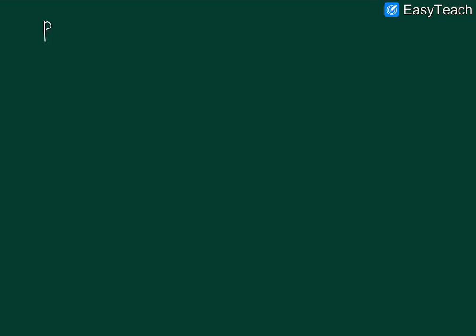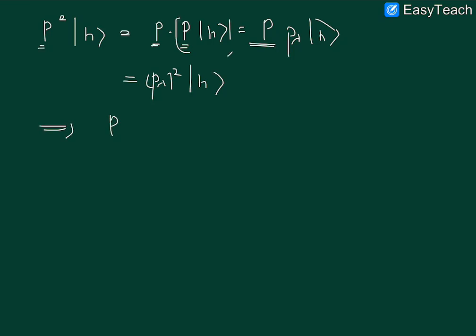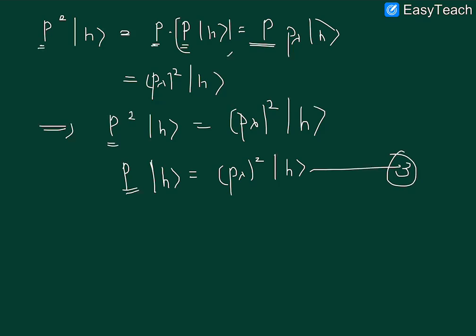Now I'll go on path three. I'm applying P^2 on vector |h⟩, but now this time instead of taking P^2 as a whole matrix, I will put it like P·P into |h⟩. This gives me P_λ into |h⟩. So finally, when P^2 is applied on |h⟩ vector, it gives me (P_λ)^2 into |h⟩ vector. Again, if I am putting my P^2 matrix as P since it's a projection operator, then P into vector |h⟩ is (P_λ)^2 into |h⟩. This is my equation three.